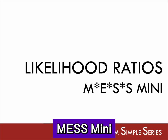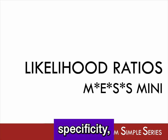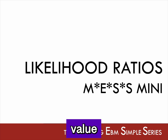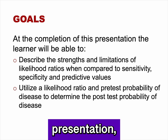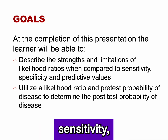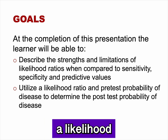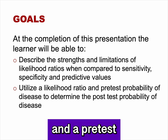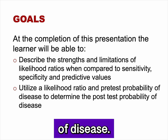A separate MESS Mini reviews the test characteristics: sensitivity, specificity, predictive value of a positive test, and predictive value of a negative test. At the completion of this presentation, you will be able to describe the strengths and limitations of likelihood ratios when compared to sensitivity, specificity, and predictive values, and utilize a likelihood ratio and a pretest probability of disease to determine a patient's post-test probability of disease.